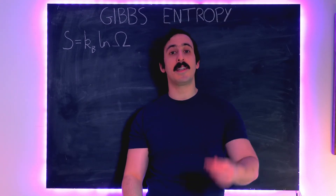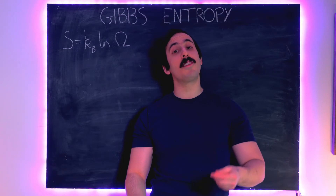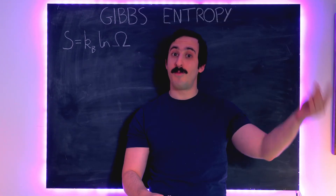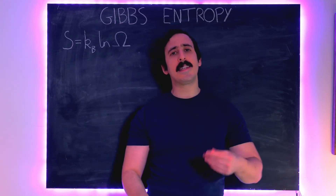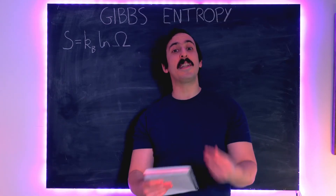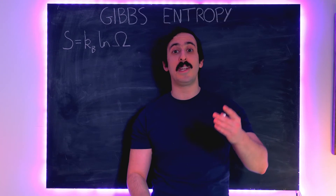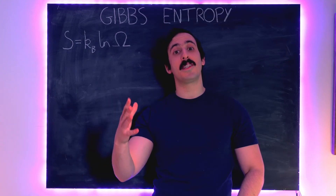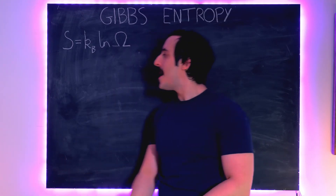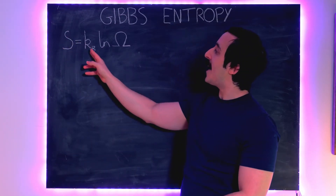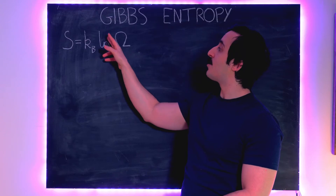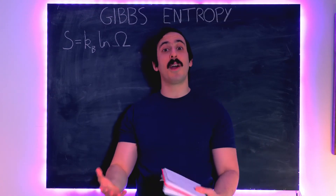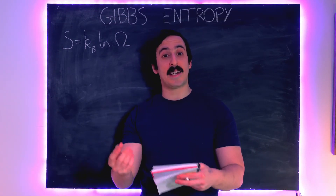So if we measure our system to be at a certain temperature, pressure and volume, then there are a number of different ways we could arrange the particles within our system which would all give rise to that temperature, pressure and volume. In that sense, the entropy is in some way quantifying our uncertainty or our ignorance about the system — we've measured all these quantities, but this is the amount we remain uncertain about the actual microscopic state of affairs. The formula we came up with is S = Kb·ln(Ω), where Ω is the number of possible microstates that our system can be in, each microstate being a particular arrangement of the atoms of our system.